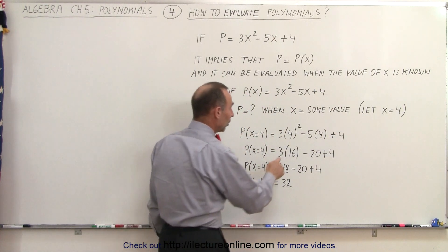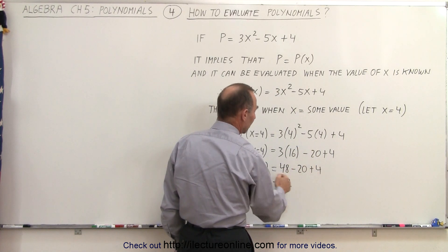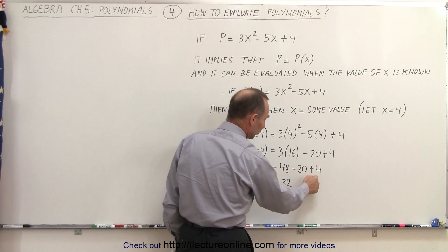When we work that out, 4 squared is 16. 3 times 16 is 48. 5 times 4 is 20. So, when we add all these terms together, 48 minus 20 is 28, plus 4 is 32,